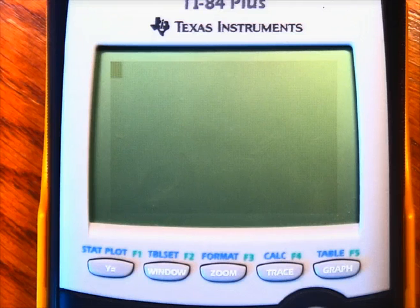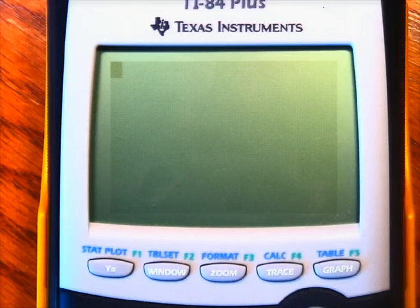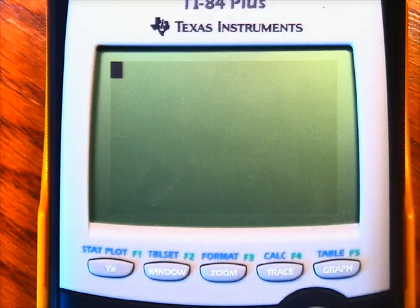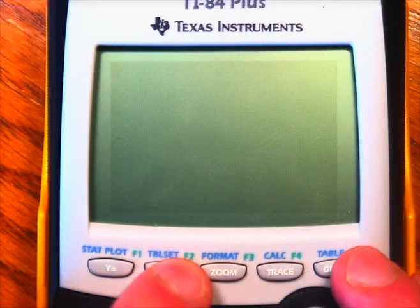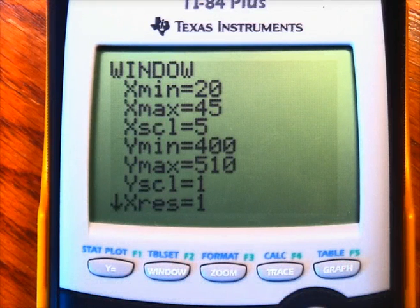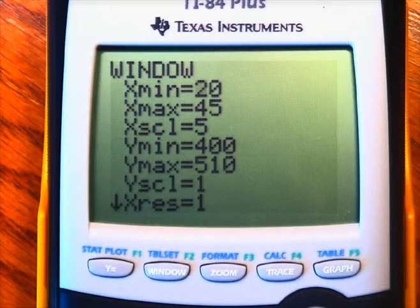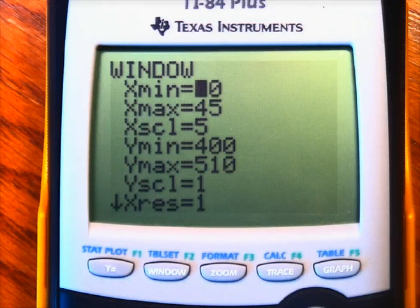So the first thing you're asked to do is make a scatter plot of the data and then find the equation of the least squares line for making a calorie prediction from lunch table time. So here is my window. I entered the data into list 1 and list 2. So these are the minimums and maximums that I chose for x and y by using the two variable statistics command.